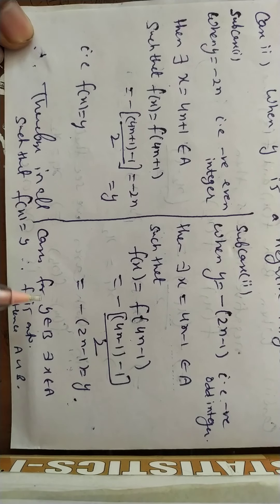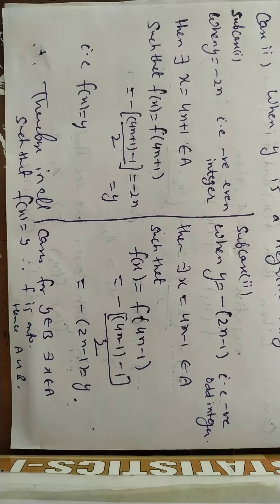Therefore, in all cases, for y belonging to B, there exists x belonging to A such that f(x) = y. This means f is onto. So in this lecture, we learned how to show equivalence between two sets using 1-1 and onto functions. Thank you very much for watching my videos. Please subscribe to my channel, Dr. Gaurav Verma.